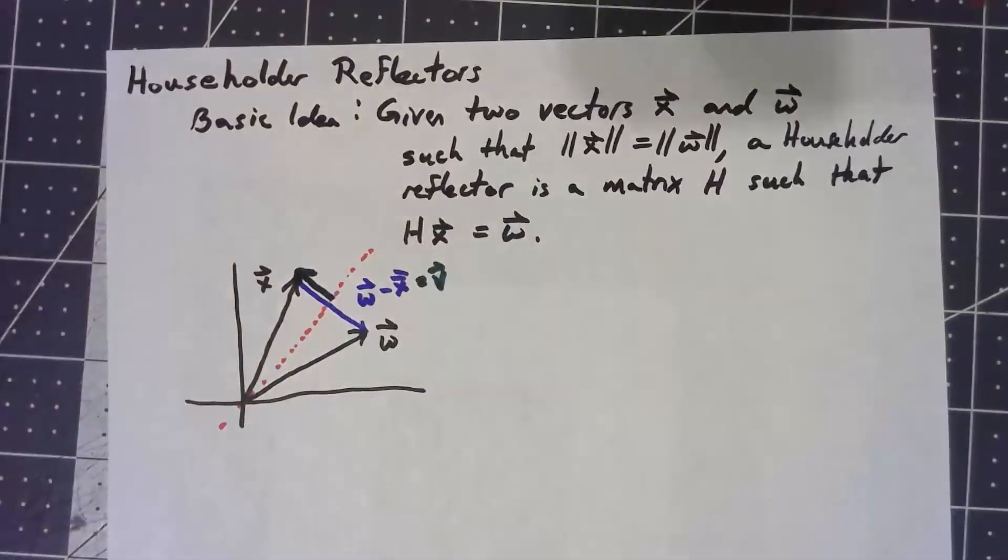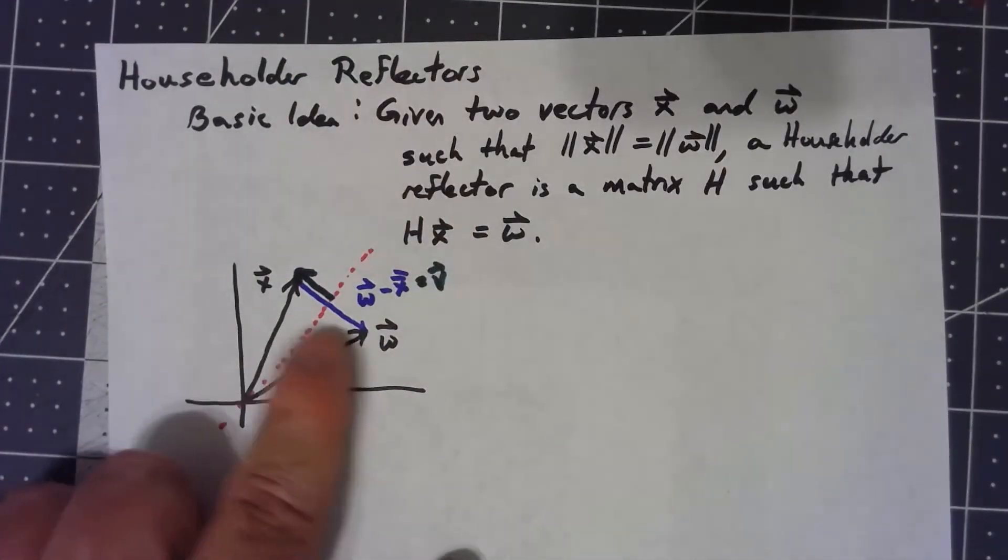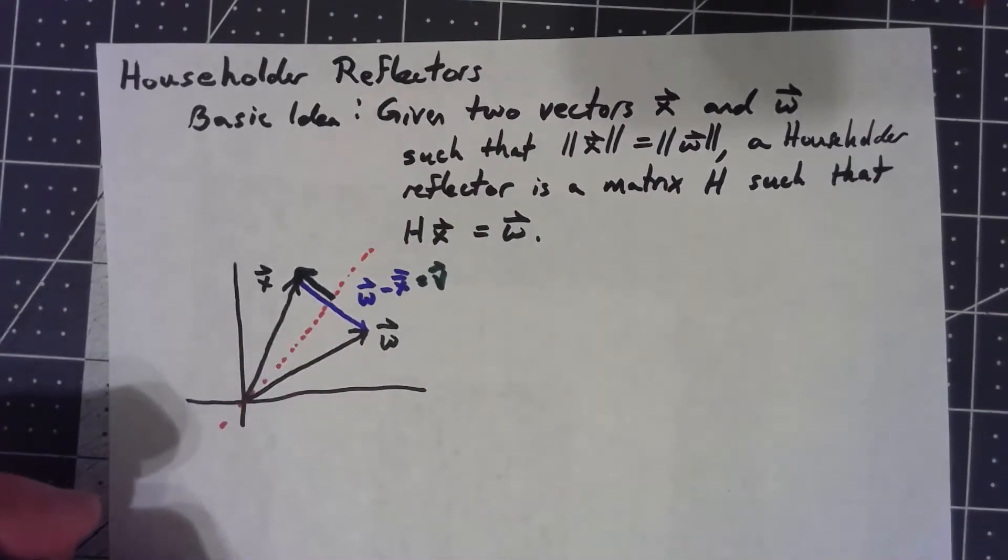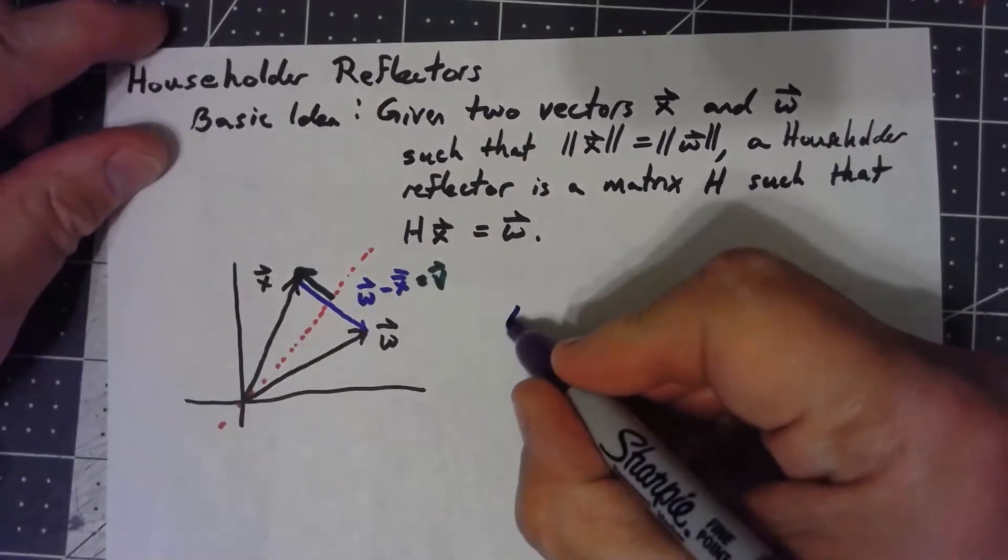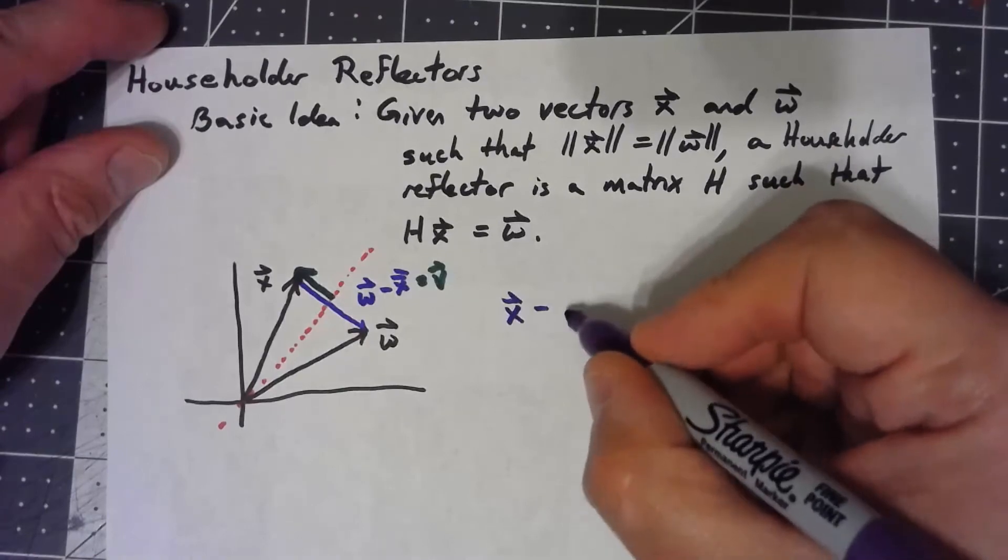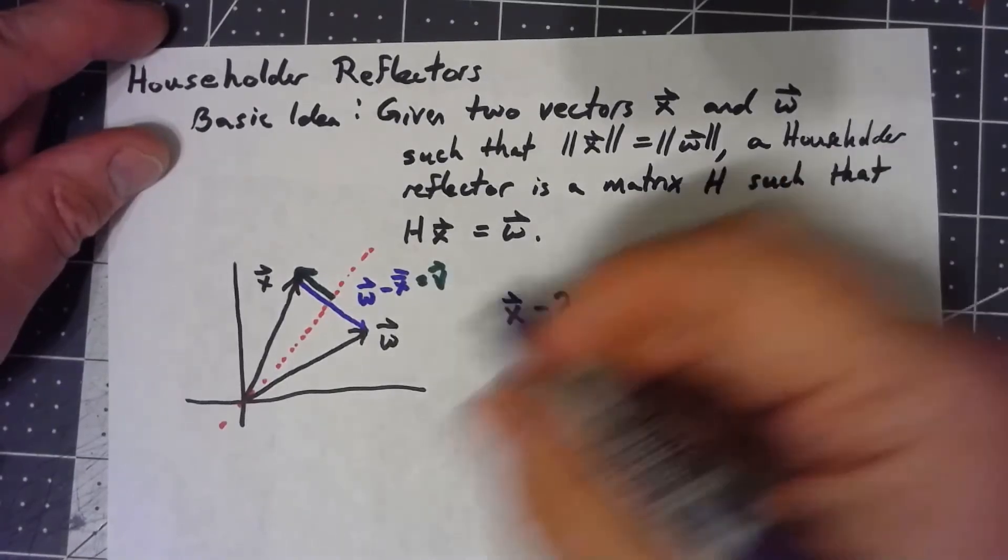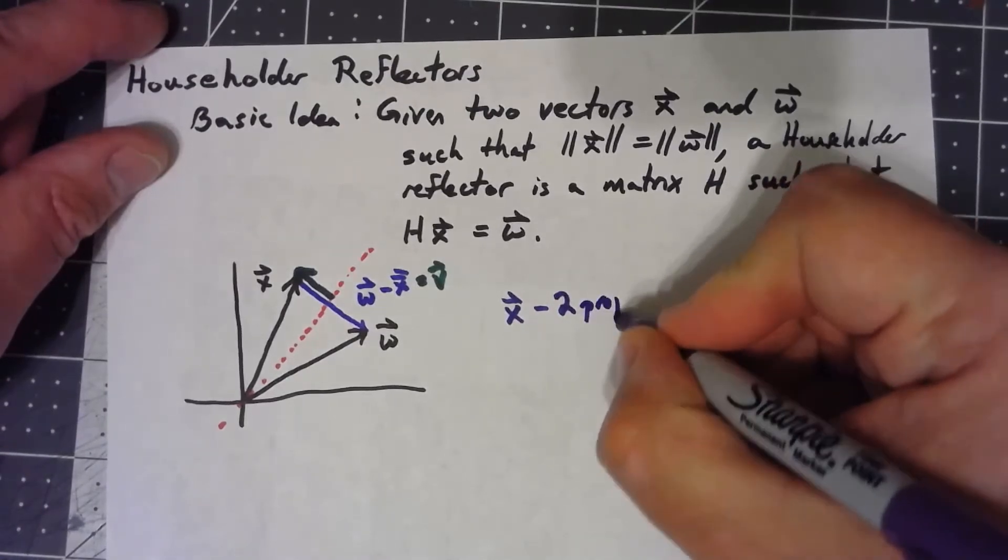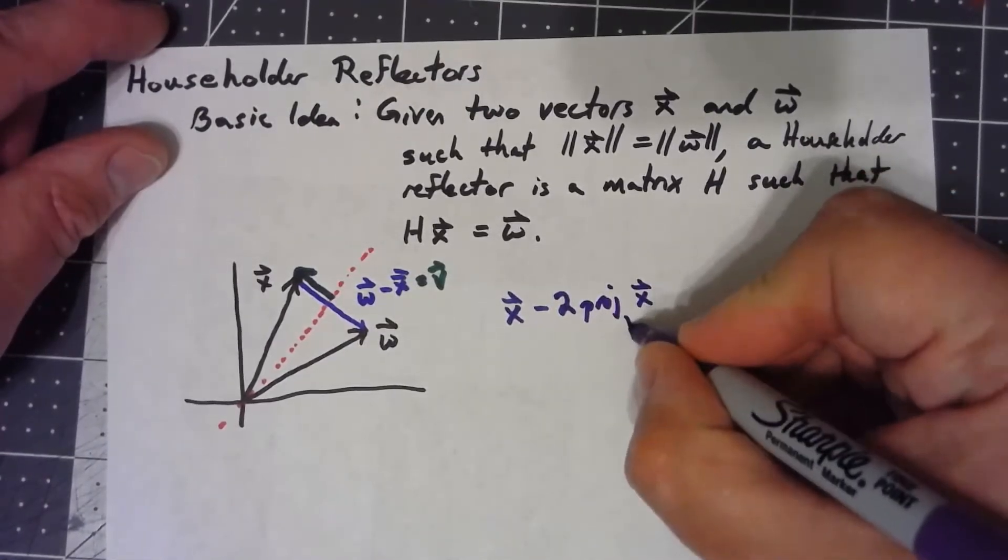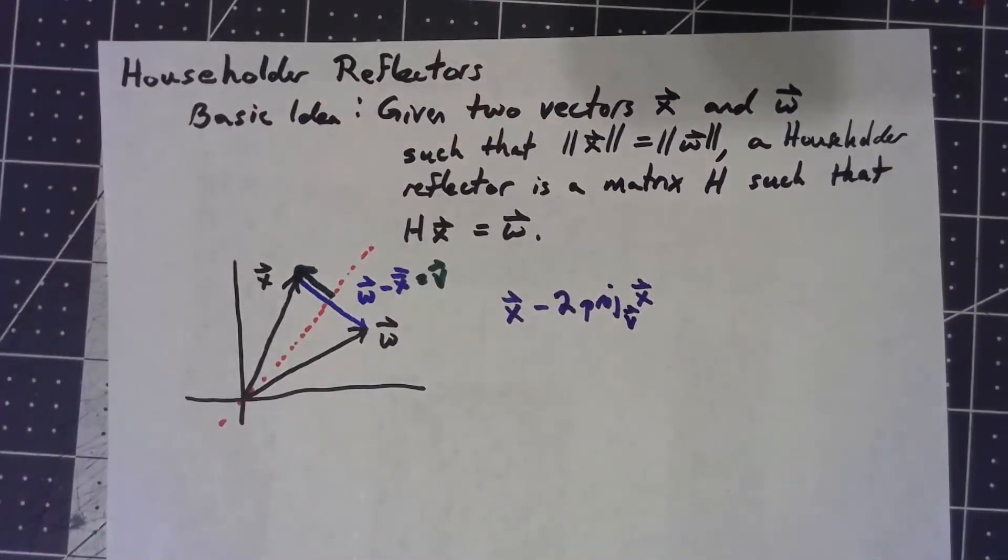Now two things about it: one, it's only half the length, and the other thing is that it's kind of pointing the wrong direction. But we can fix both of those things. We can then basically say if we take the x vector minus twice that projection of x onto v, that's going to give us w.